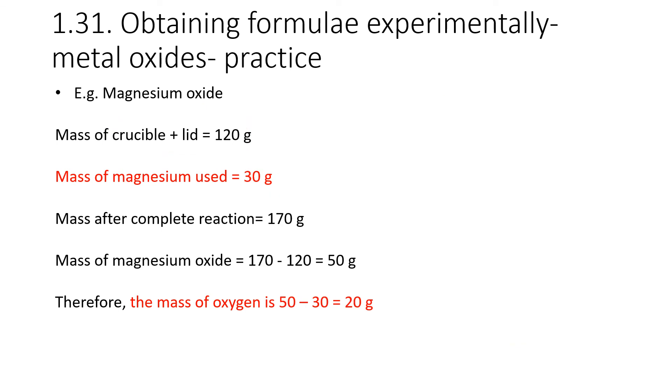Let's give this another try with some different numbers. Our crucible and our lid still weigh 120 grams, but this time we add 30 grams of magnesium. And after the reaction, we have 170 grams of magnesium oxide plus the crucible and the lid, which means we have 50 grams of magnesium oxide and 20 grams of oxygen.